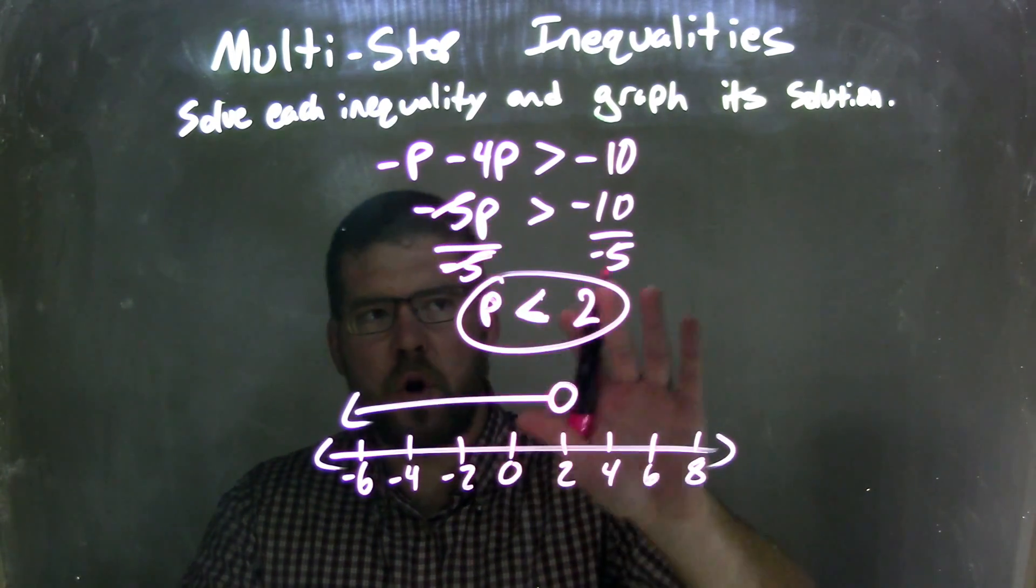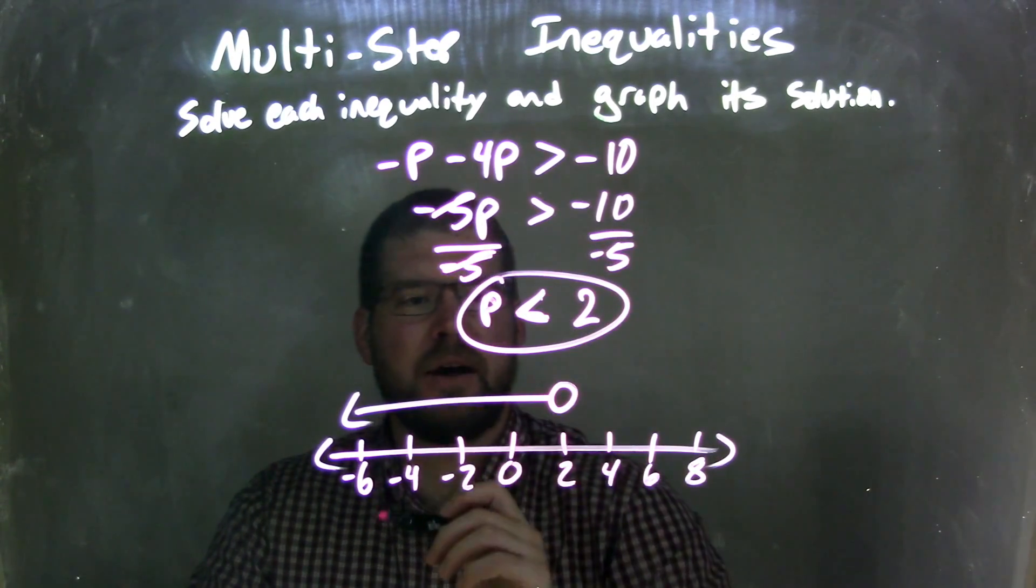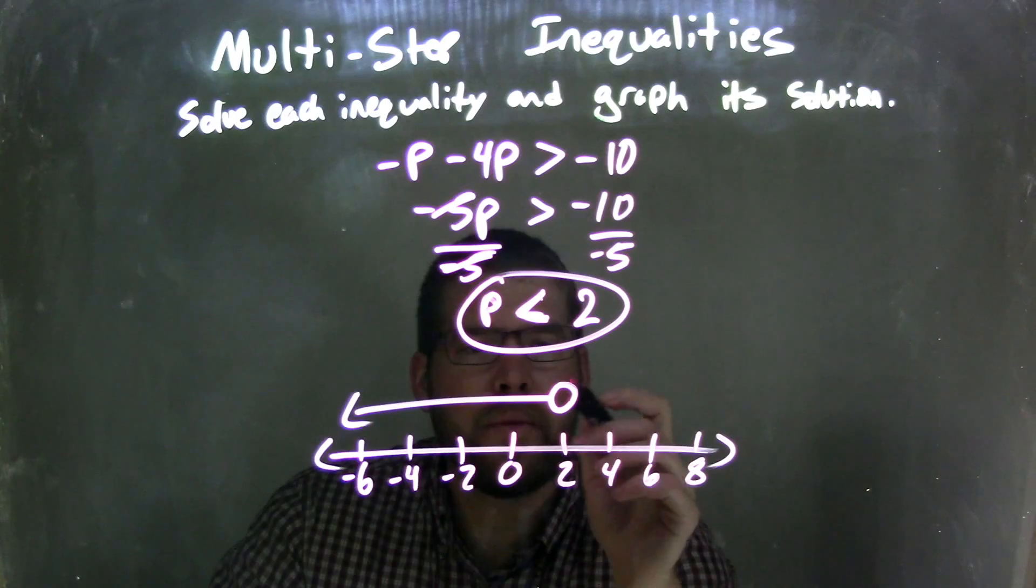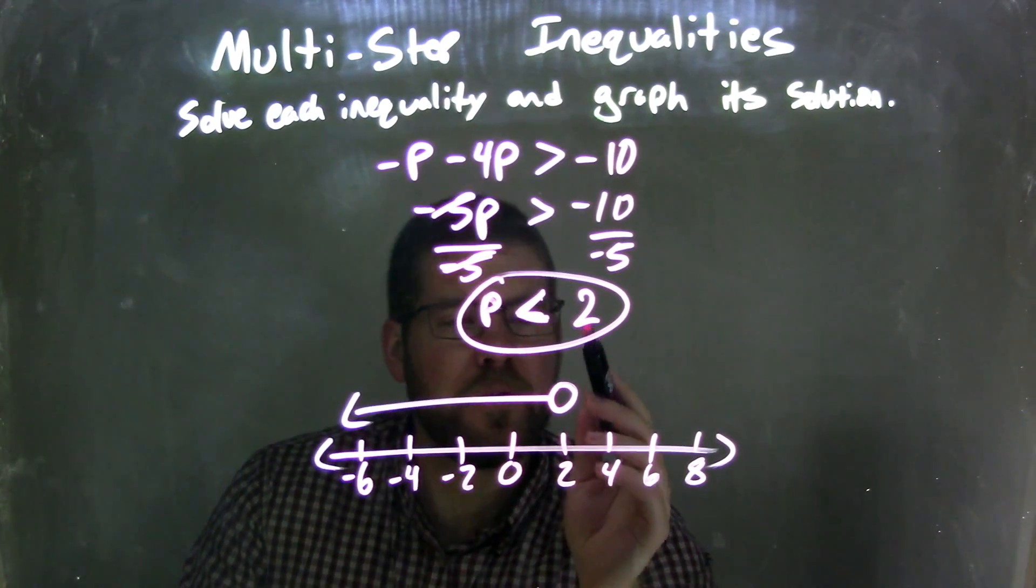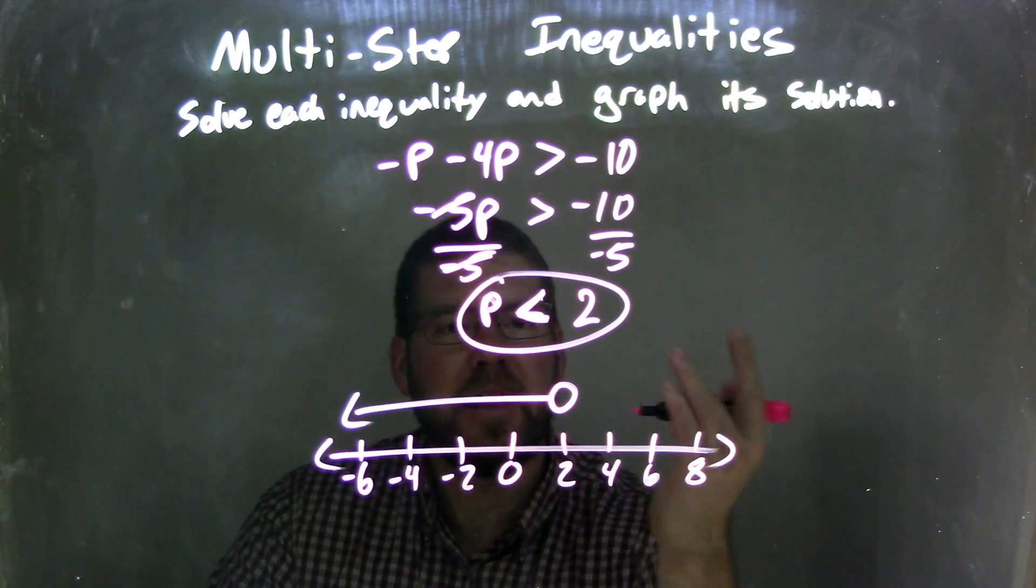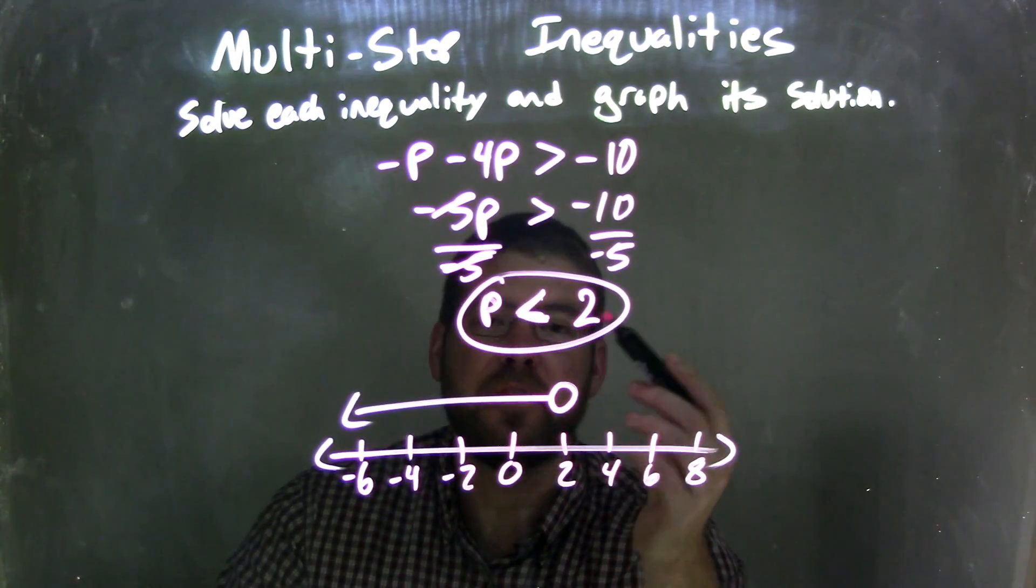But since I divided by a negative over the inequality, that inequality flips from greater than to less than. Now I have my final answer. For the graph, I put an open circle because P is not equal to 2, and I shade to the left because P is less than 2. Now we have our graph that matches the final answer: P is less than 2.